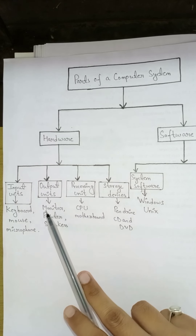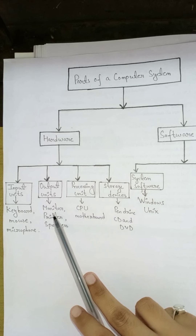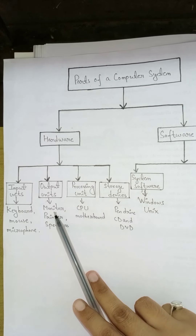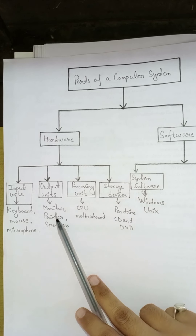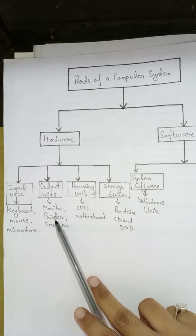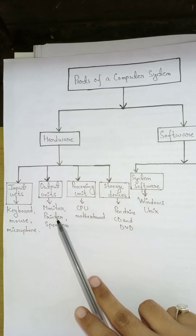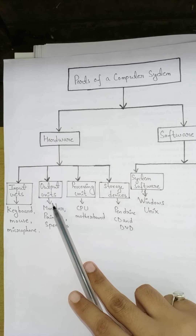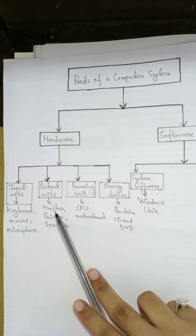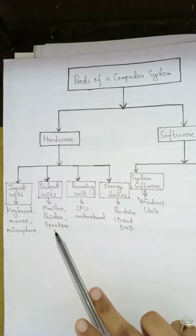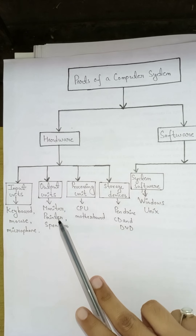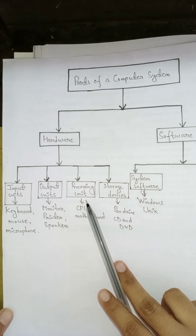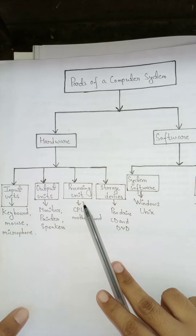Output units — what are these devices? Output units are devices that show us the results or data processed by our computer. Monitor, printer, and speakers are some examples of output units.